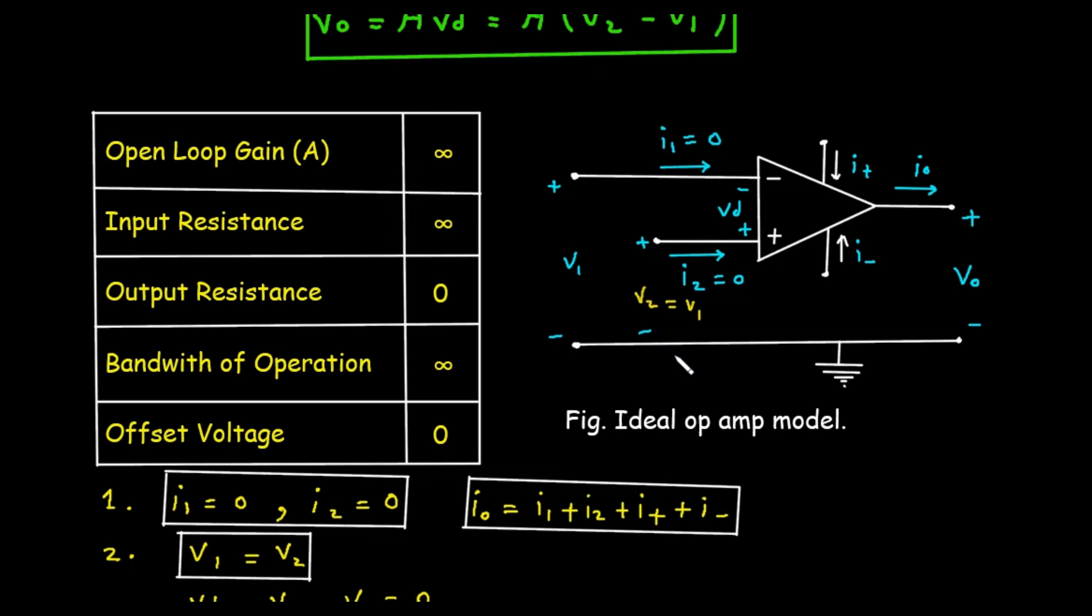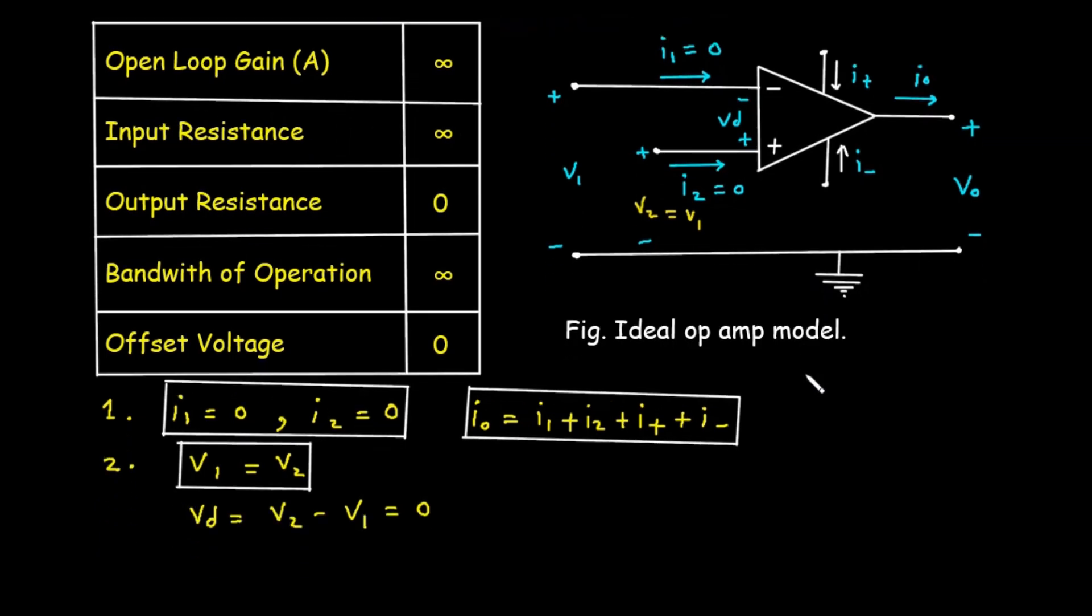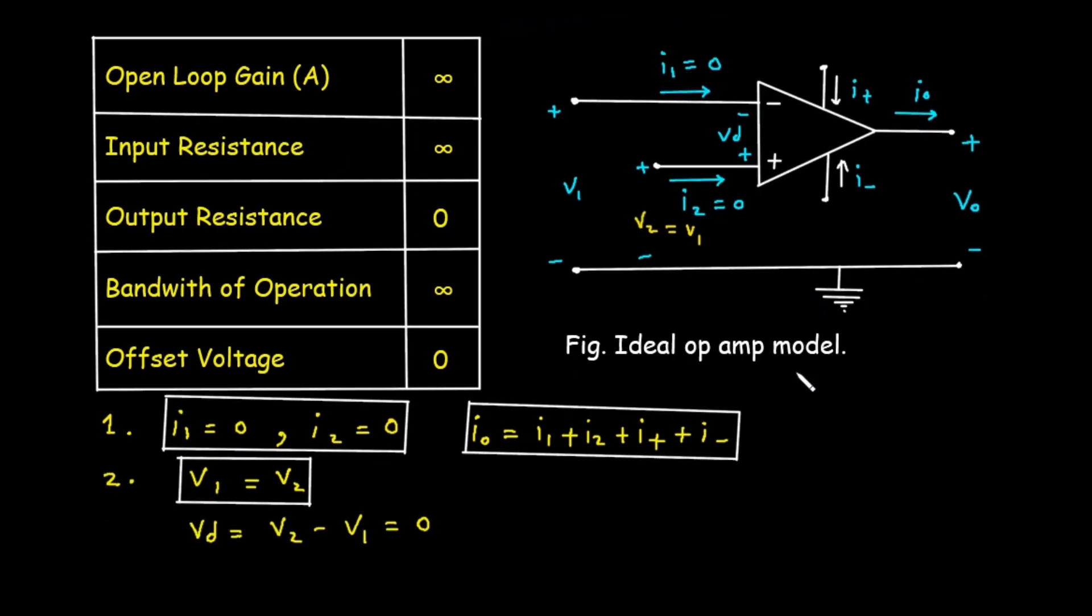Next we will see the two golden rules for ideal Op Amp analysis. These ideal characteristics give us two simple but powerful rules, often called the golden rules of Op Amp analysis. These rules apply when the Op Amp is used in a negative feedback configuration where the output is connected back to the inverting input, which is how it's used 99% of the time.